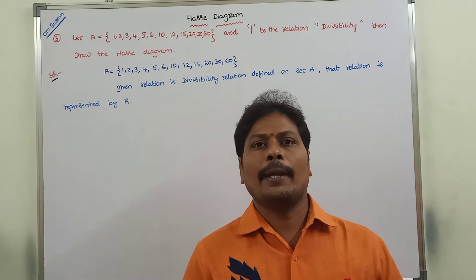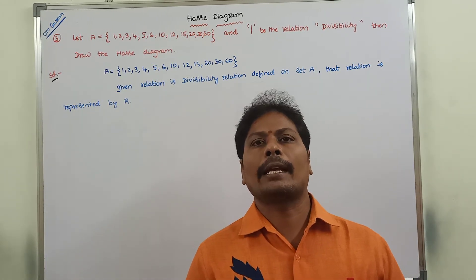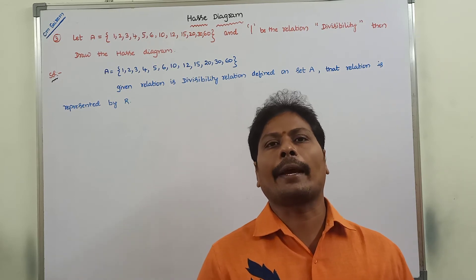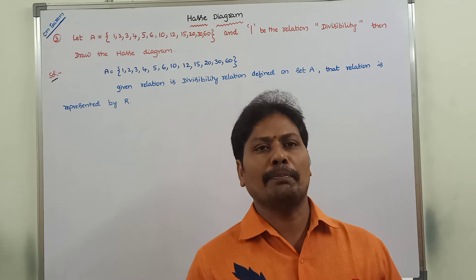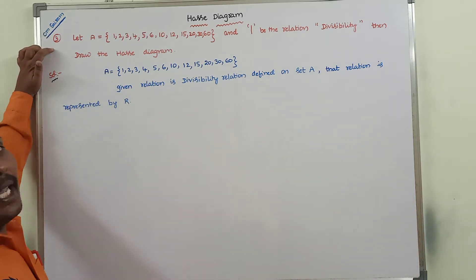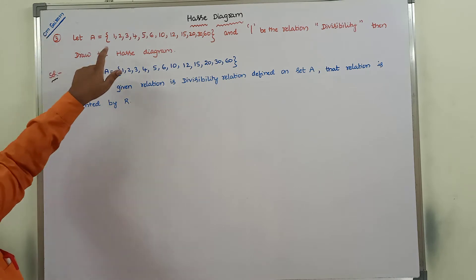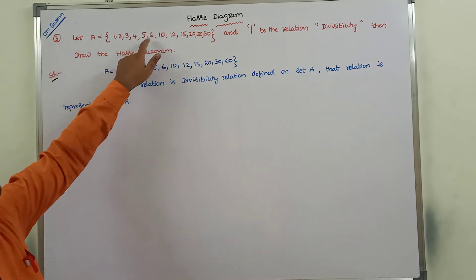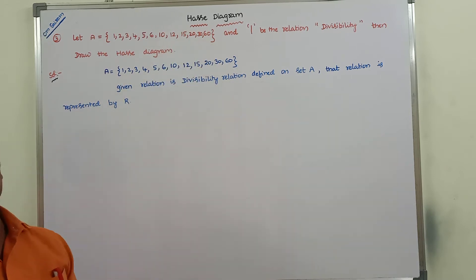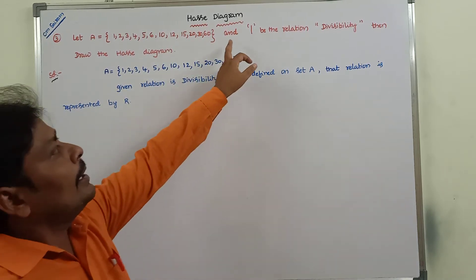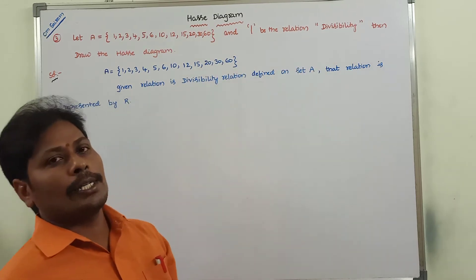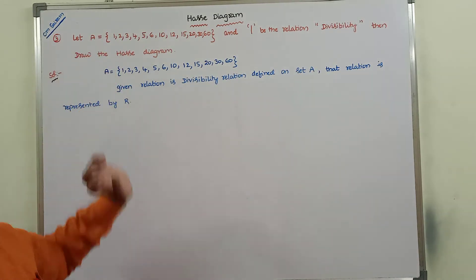Hi friends, today I am giving a lecture on an example problem on the Hasse diagram in discrete mathematics. Let A be equal to the set {1, 2, 3, 4, 5, 6, 10, 12, 15, 20, 30, 60} and the relation is the divisibility relation. Then draw the Hasse diagram.